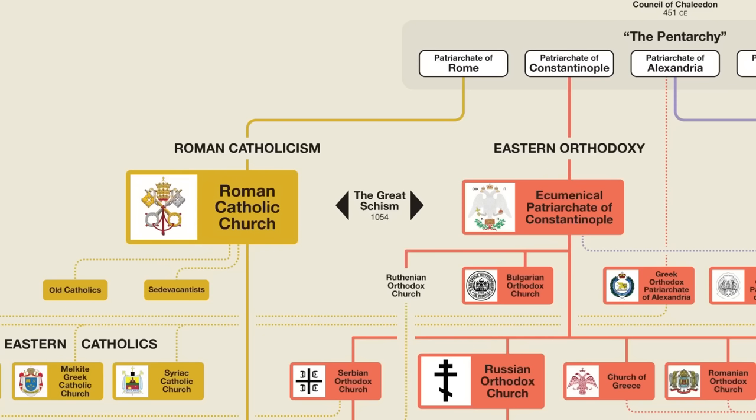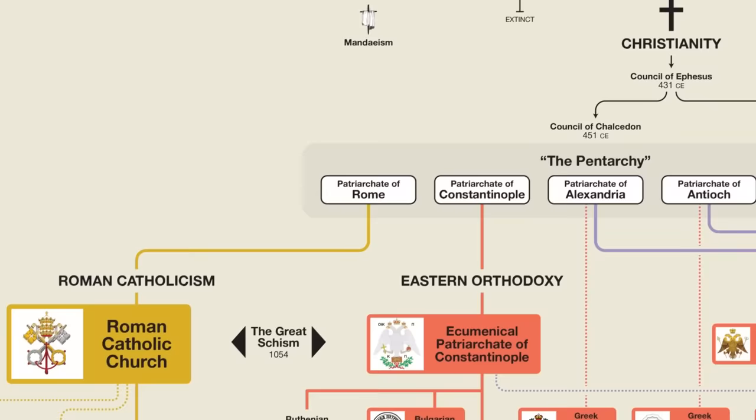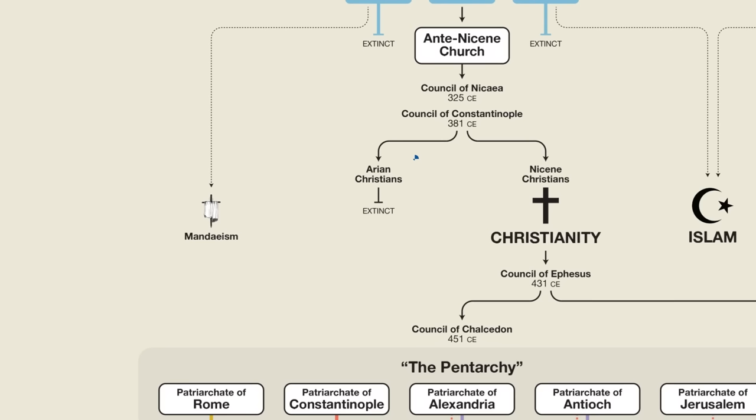Before we jump into today's topic, let me first address a few things that came up in the comment section on Episode 1. First, the word 'extinct.' I indicated on the chart that the Aryan Christians went extinct. While many people pointed out that the Jehovah's Witnesses are very Arian in their theology — which is true — I want to clarify that whenever I show a group going extinct on this chart, I'm always referring to the original group, not to similar groups that may arise later.